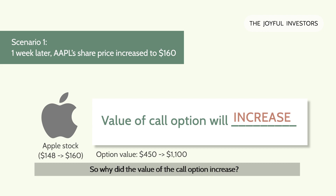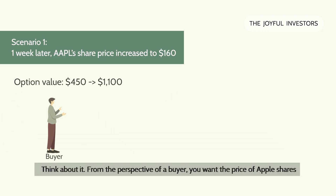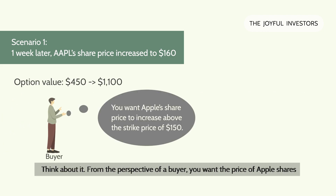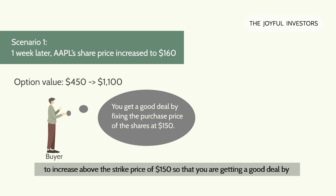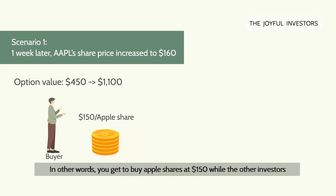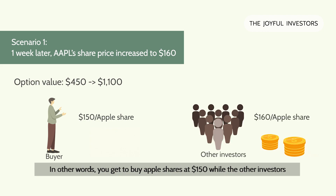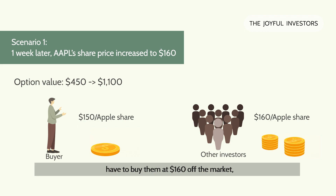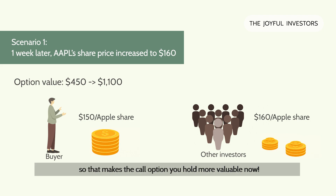So, why did the value of the call option increase? Think about it. From the perspective of a buyer, you want the price of Apple shares to increase above the strike price of $150, so that you are getting a good deal by fixing the price of the Apple shares at $150 should you decide to exercise the call. In other words, you get to buy Apple shares at $150 while other investors have to buy them at $160 off the market. That makes the call option you hold now more valuable.